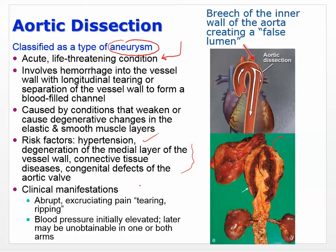Clinical manifestations of aortic dissection include abrupt, excruciating tearing or ripping pain. People will probably first think they're having a heart attack, but that can be worked out with an EKG. Blood pressure is initially elevated but later may become unobtainable in one or both arms, as the collection of blood can cause blood pressure to drop.